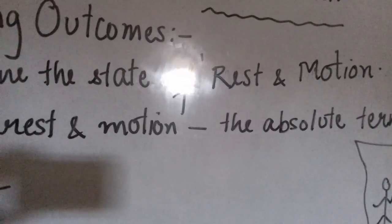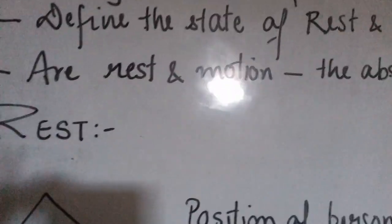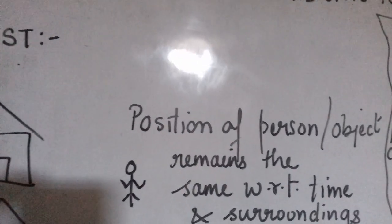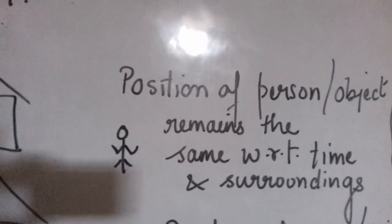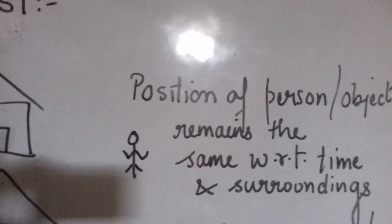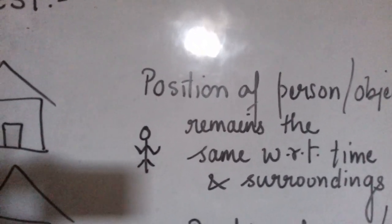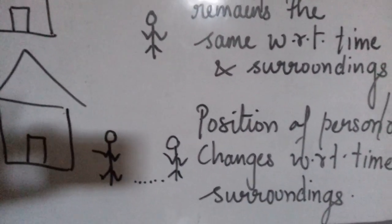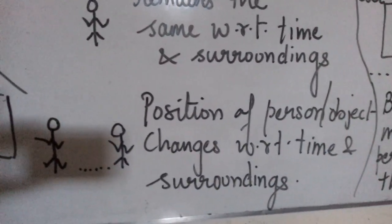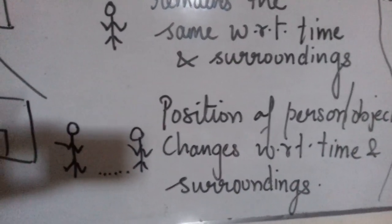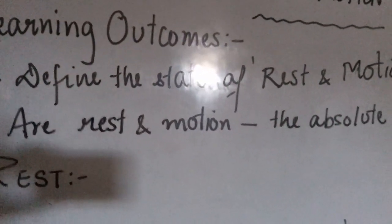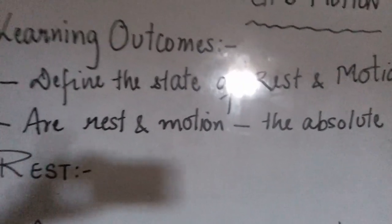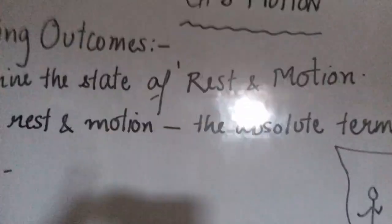A body is said to be at rest when its position remains the same or does not change with respect to time and surroundings. A person is said to be in motion when his position changes with respect to time and surroundings. Hope you have achieved the first learning outcome. Let us move to the next one.